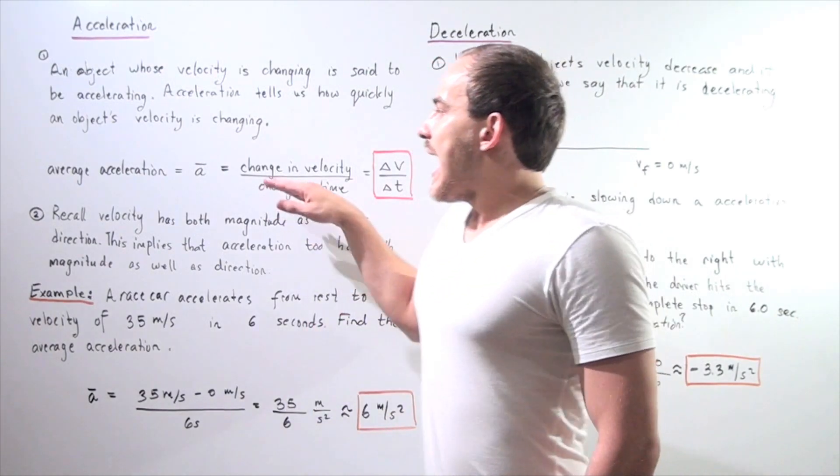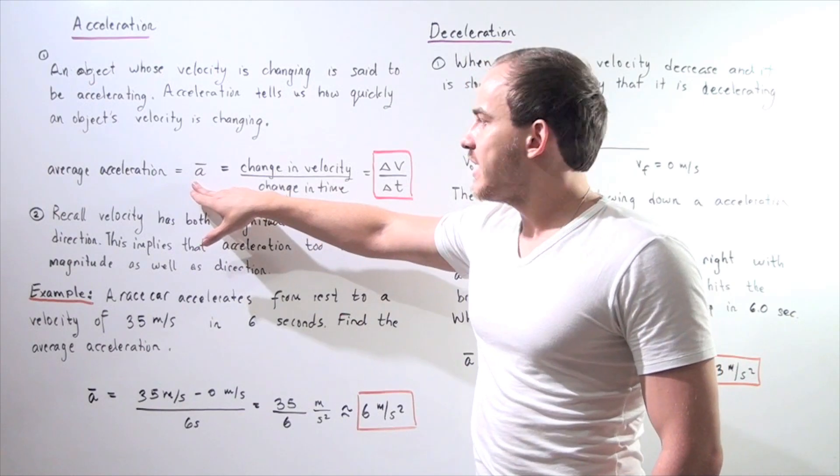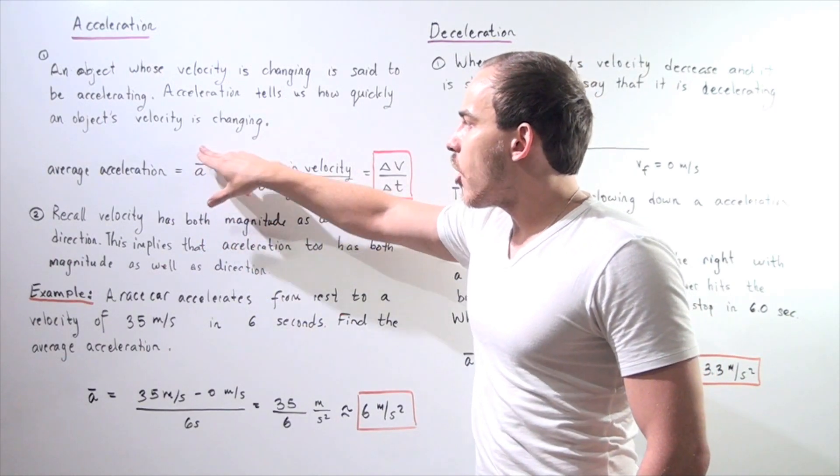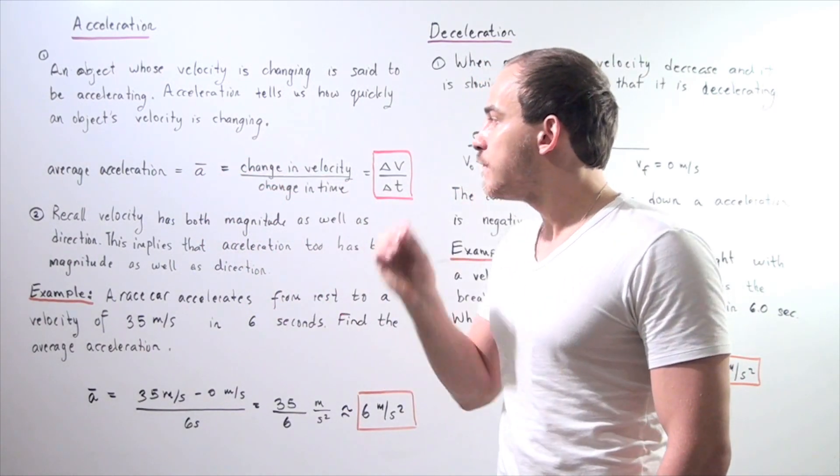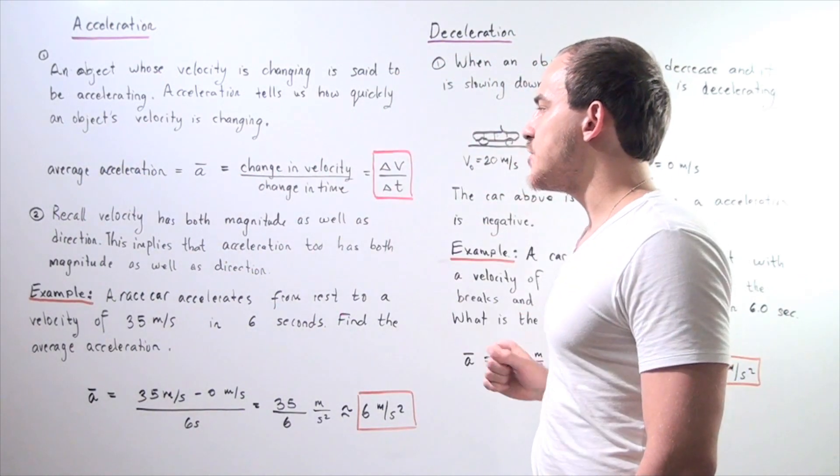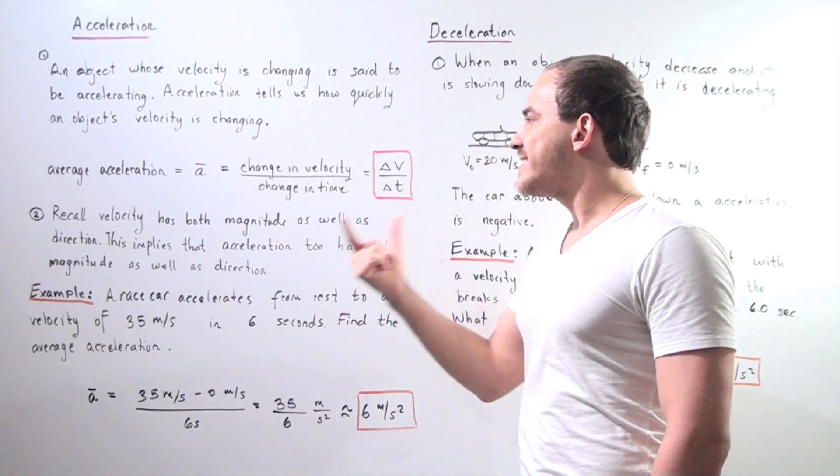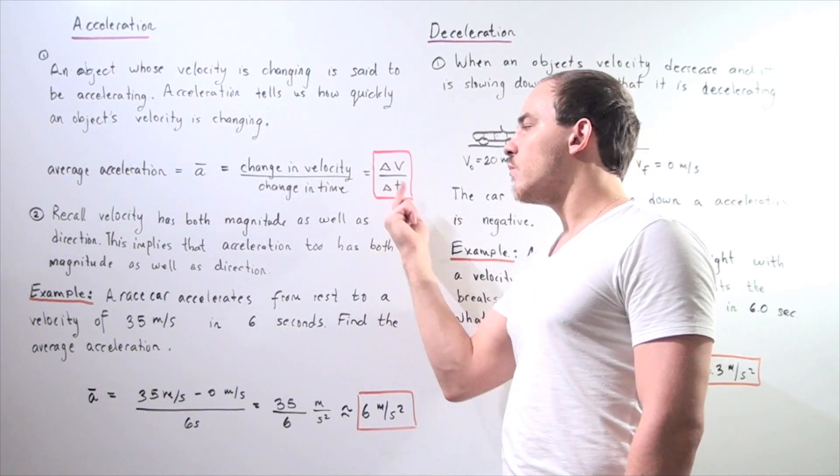Average acceleration is given by the following symbol, lowercase a with a bar on top. The bar simply means average. The formula for average acceleration is given by the following equation: change in velocity divided by change in time. In simple form, delta v over delta t.